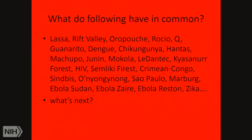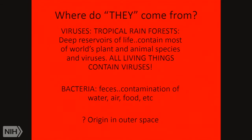You might consider what all these incredible named agents have in common. Well, one thing is they all come out of the tropical rainforest — the deep reservoir of life that contains most of the world's plants, animal species, and viruses. All living things contain viruses, and it seems as if all the agents on that list somehow emerge from tropical rainforests. Bacteria have a different source — there's even a school of thought, voiced by Nobel laureate Josh Lederberg, that bacteria may have originated from outer space.